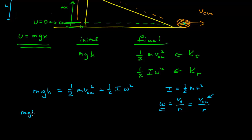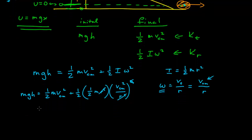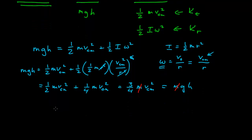Given those relationships, we can substitute in and get: mgh equals one-half m v_cm squared, plus one-half times the moment of inertia one-half m r squared, times (v_cm / r) squared. Bringing the squares inside, the r squares cancel, and we get one-half m v_cm squared plus one-quarter m v_cm squared, which equals three-quarters m v_cm squared. Setting this equal to mgh, the m's cancel, and we solve for v, which is the square root of four-thirds g h.